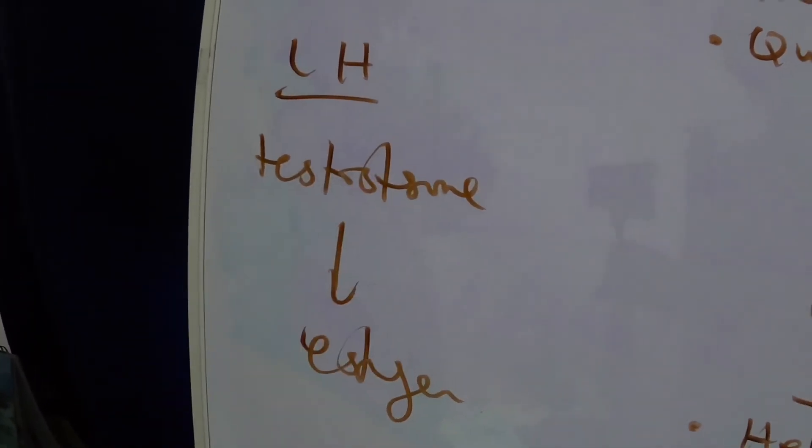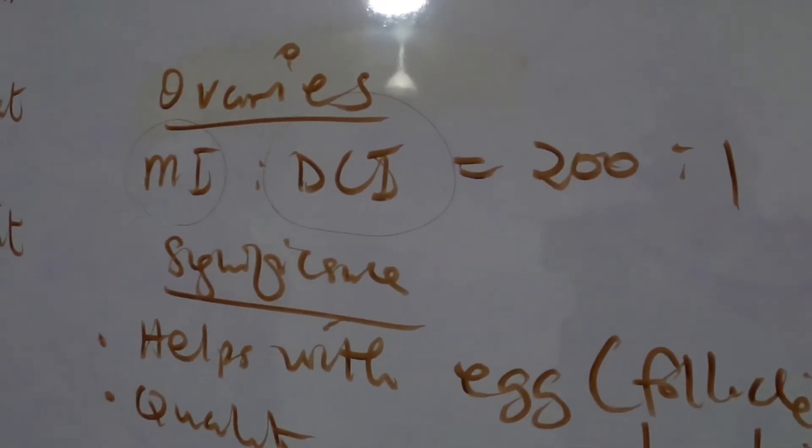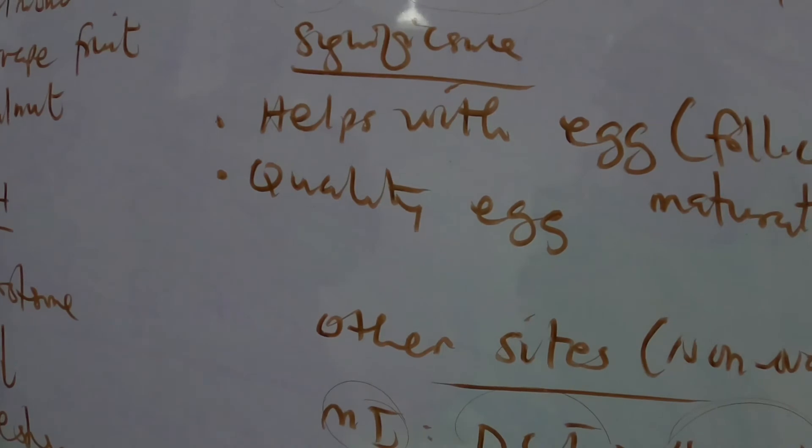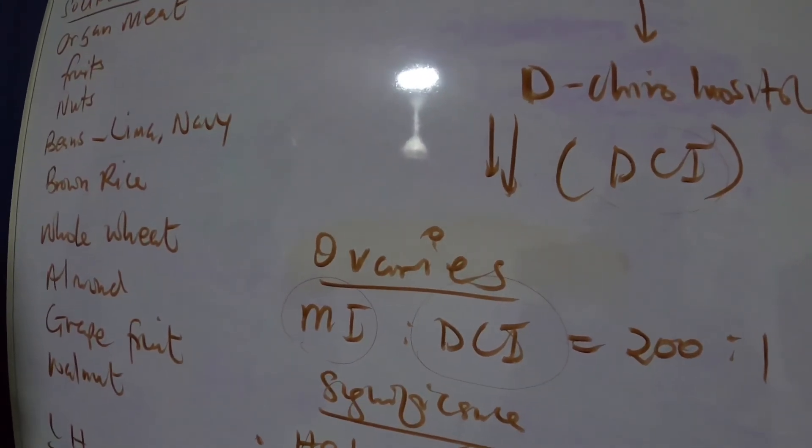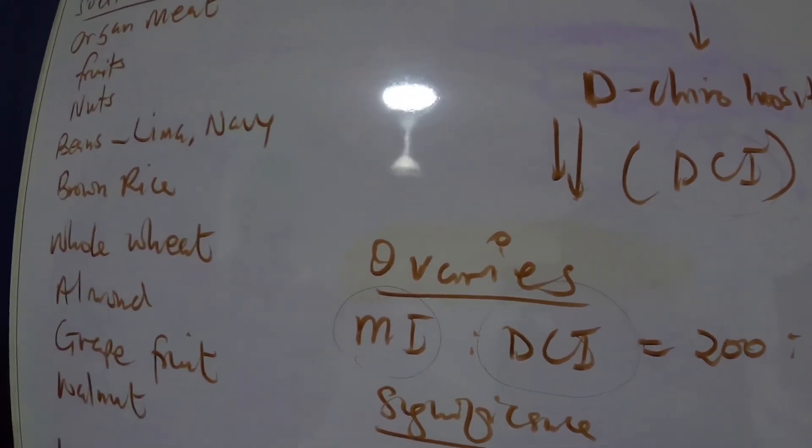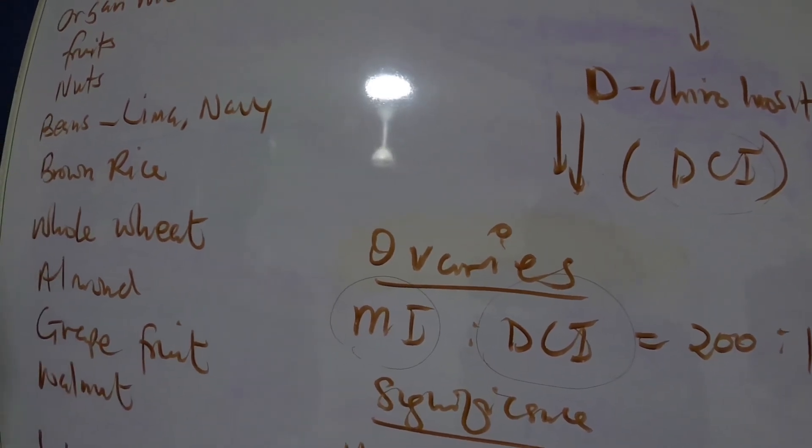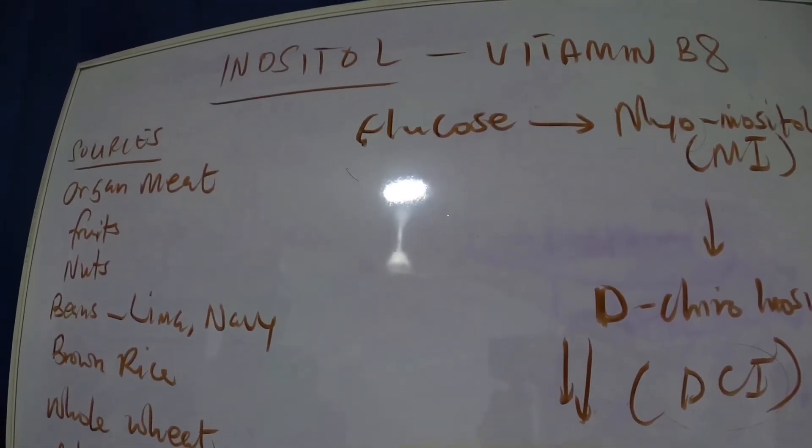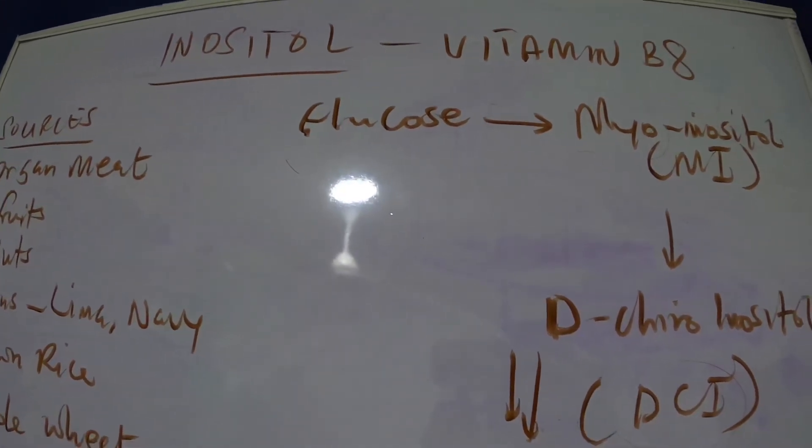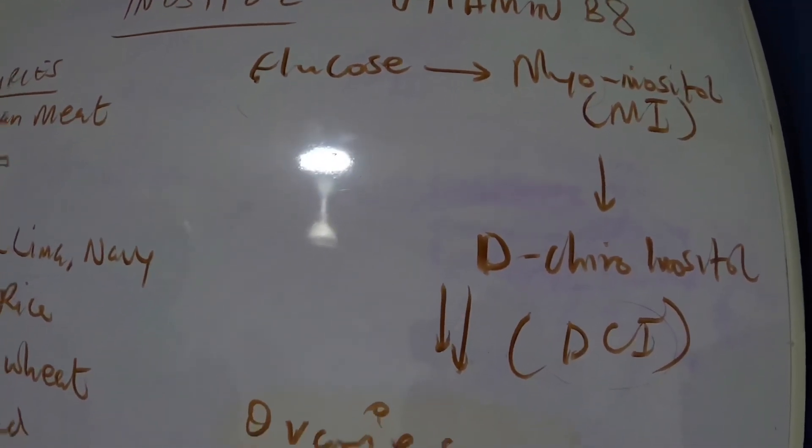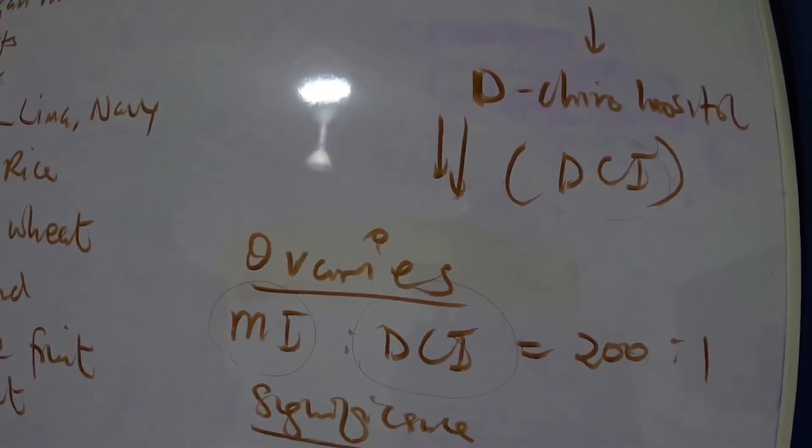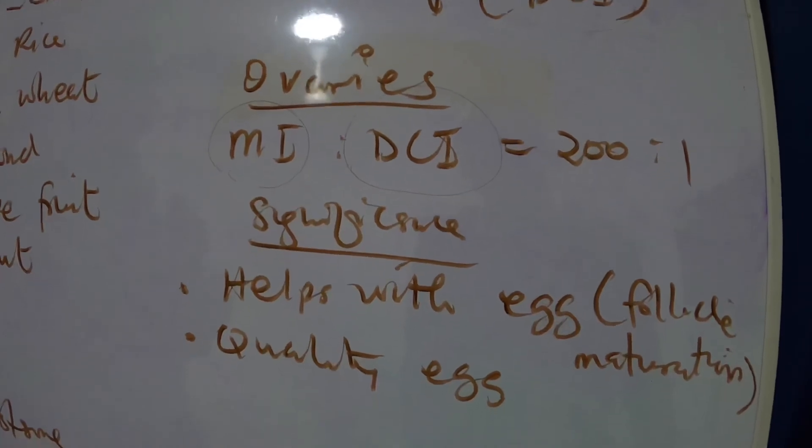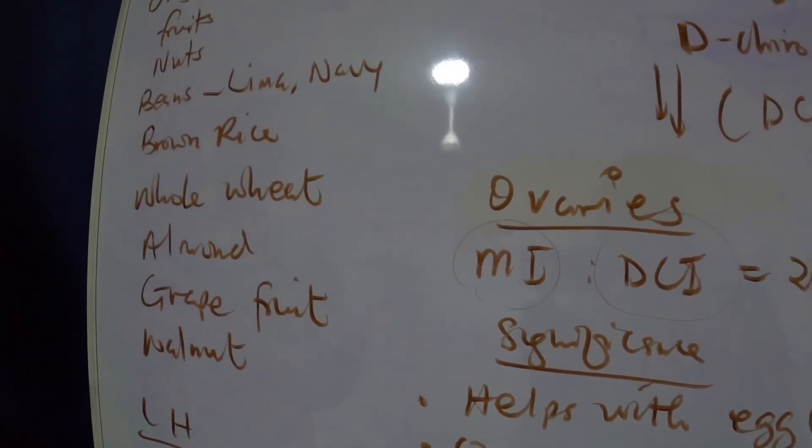And then also, one last thing is that this inositol is also able to help reduce insulin resistance. Like we said, PCOS patients usually have issues with insulin resistance, meaning that their bodies are able to produce insulin but the cells of the tissues cannot use it, so they usually have higher levels of insulin. This inositol helps to combat this insulin resistance by making the cells more sensitive to insulin. In that case, they are able to use glucose produced in the body for energy production. Also, higher levels of insulin in people with PCOS resulting from insulin resistance is actually what causes them to have acne.